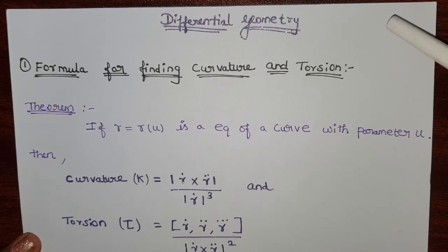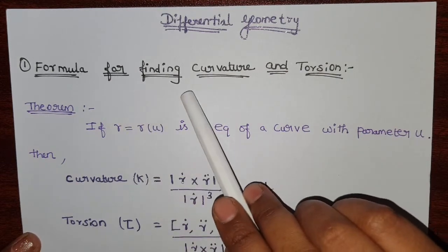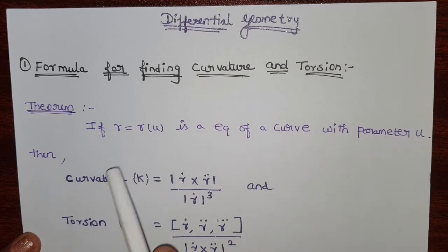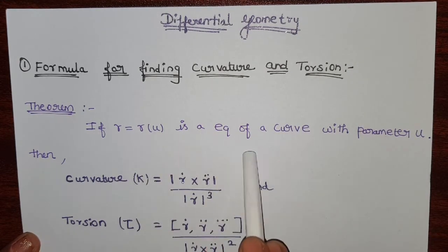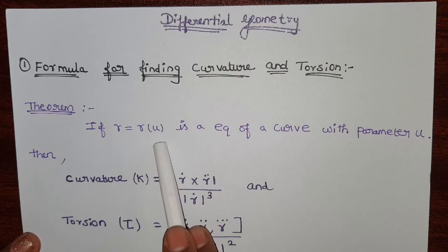Welcome to our channel VDMAX Academy. In this video we are going to see about formulas for finding curvature and torsion in differential geometry. If R equals R of U is the equation of a curve with parameter U, here we are using the parameter U.